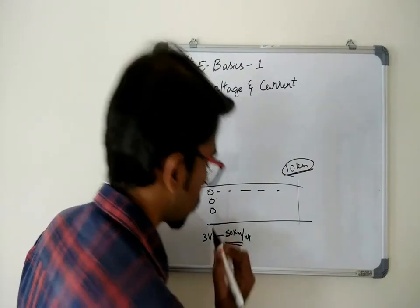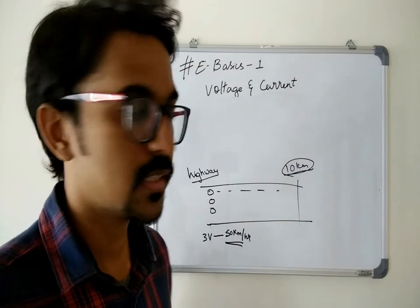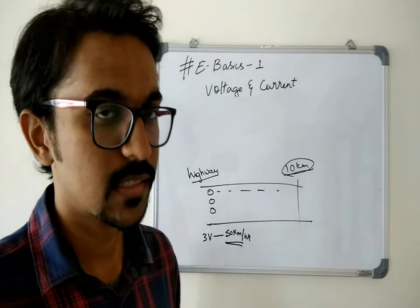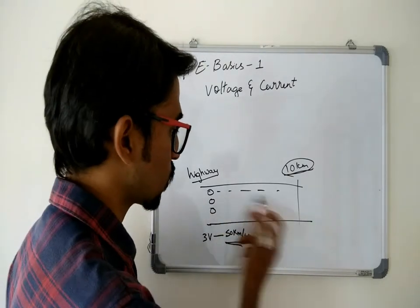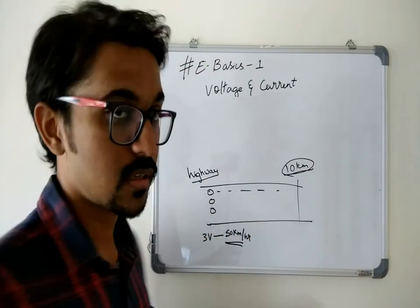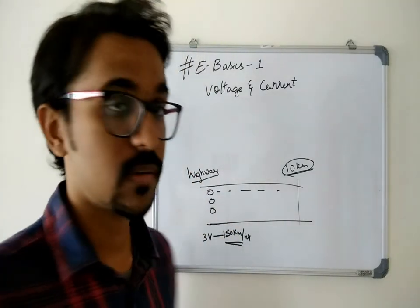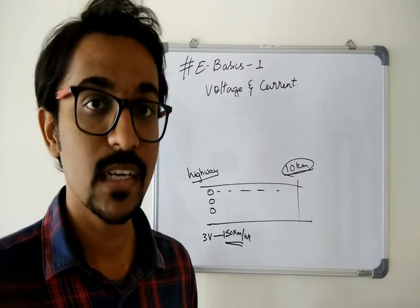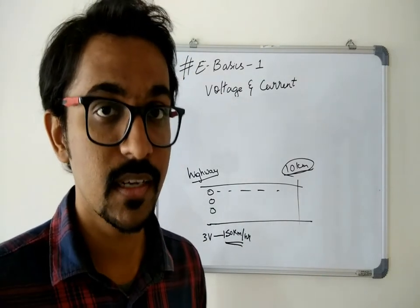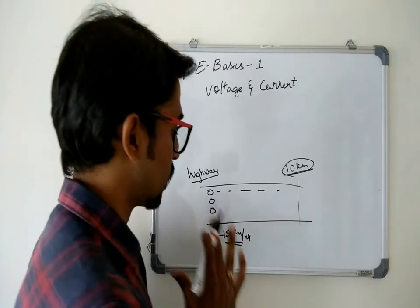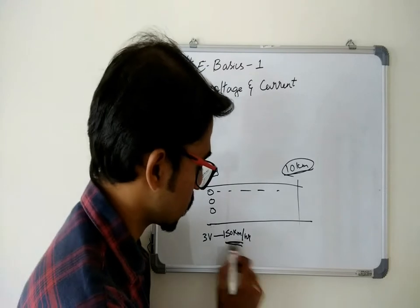But what if I make it 50 kilometers per hour? That is kind of fast, an average speed. There is little chance of accidents in that case. They might slip on the road or they might dash each other or collisions might happen and they might die. What if I make it 150 kilometers per hour? That is kind of dangerous because 150 kilometers per hour is quite fast and that might kill these people.